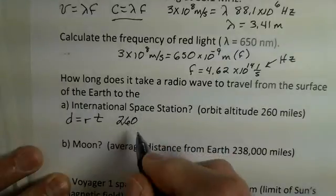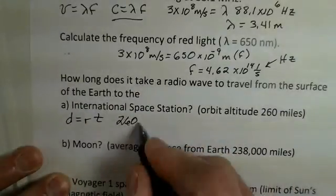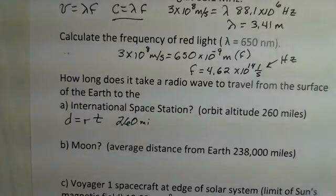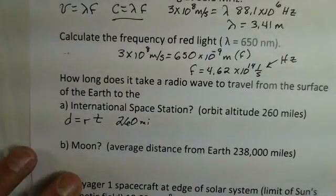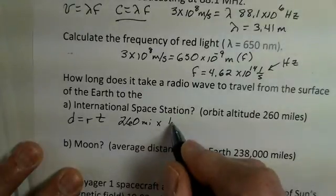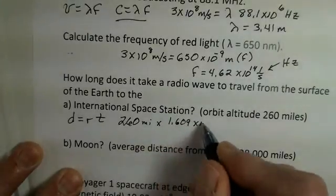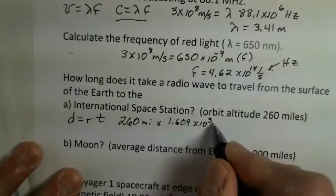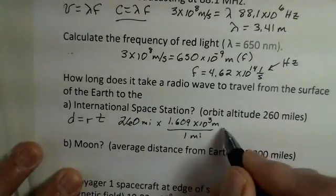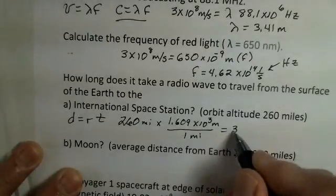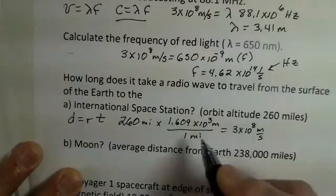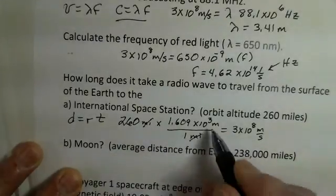Now you know we're going to be using 3 times 10 to the eighth meters per second for the rate. Miles is not meters. It starts with m. But I need to convert miles into meters. So we bring in a conversion factor. 1.609 times 10 to the third meters is one mile. That's the distance. And now we have 3 times 10 to the eighth meters per second.